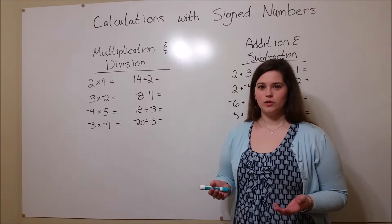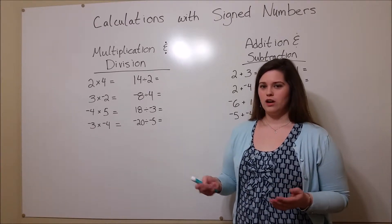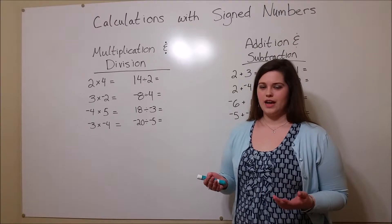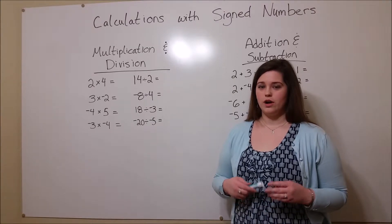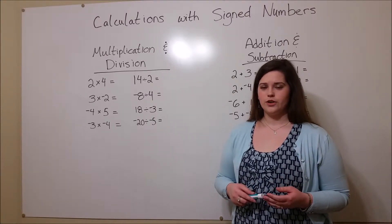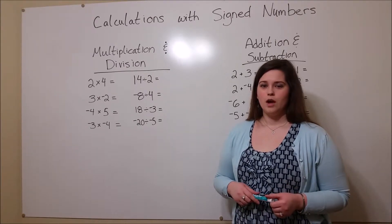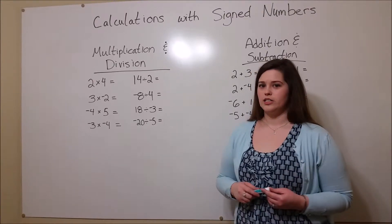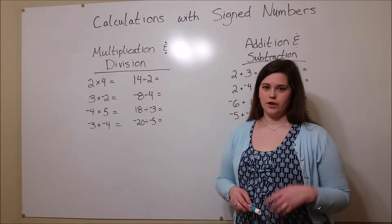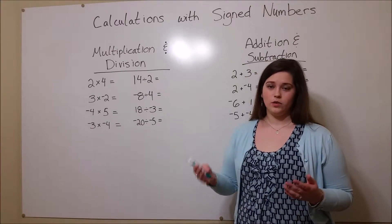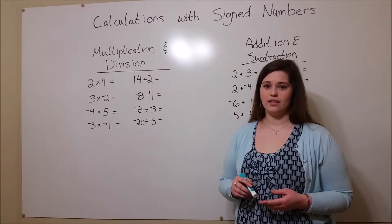What are signed numbers, you might ask? This refers to numbers that are positive and numbers that are negative. You might also ask why learning calculations with signed numbers is important for the field of biology. Well, it turns out it's important for several different scientific fields — biology, chemistry, physics, etc. — because there's a lot of math in these scientific fields. Places in biology where you might use calculations with signed numbers include converting between different temperature scales, like converting between Fahrenheit and Celsius or back again, and also doing other calculations like calculations with specific heat.